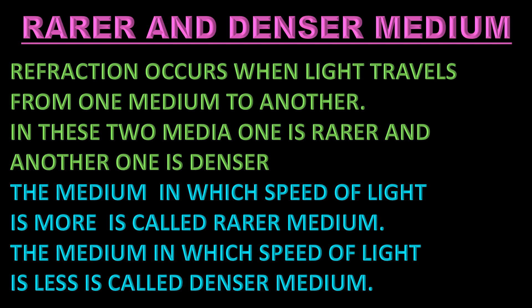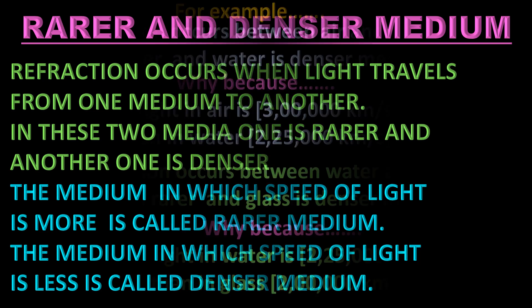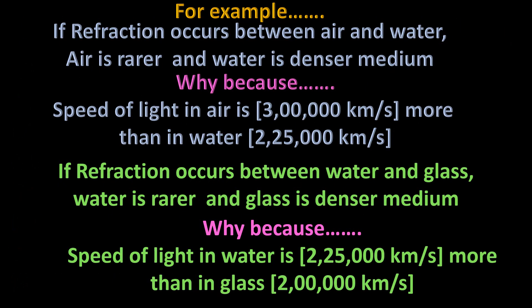Refraction occurs when light travels from one medium to another. In these two media, one is rarer and another one is denser. The medium in which the speed of light is more is called the rarer medium, and the medium in which the speed of light is less is called the denser medium. For example, if refraction occurs between air and water, air is the rarer and water is the denser medium — because the speed of light in air is more than in water.